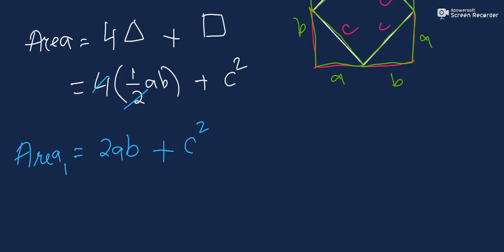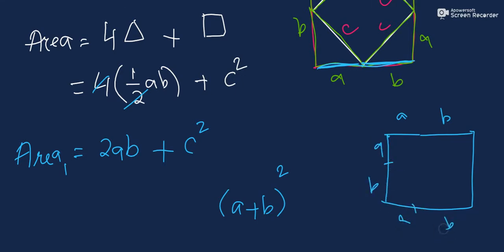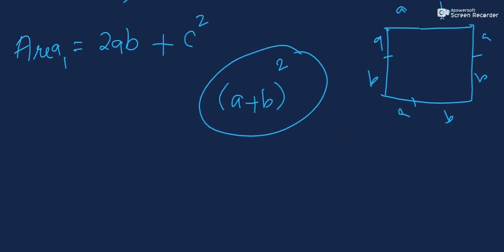Now I can also find the area of the bigger square using a second method, because the side of the bigger square is made up of two parts: A and B. So the full side length is A plus B. I am labeling this as equation number one and now finding the area using the formula for a square with side (A + B).